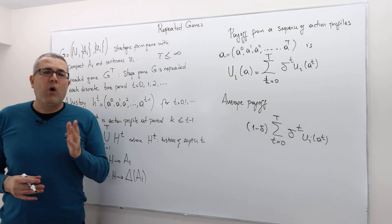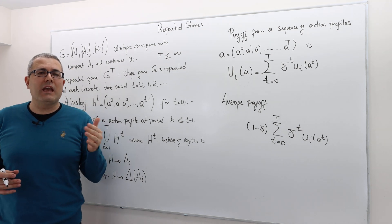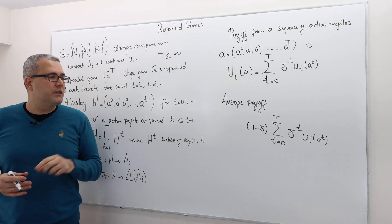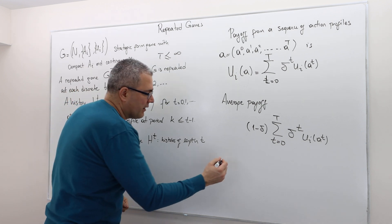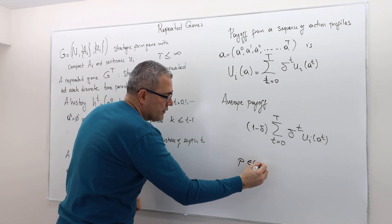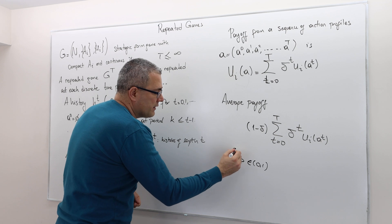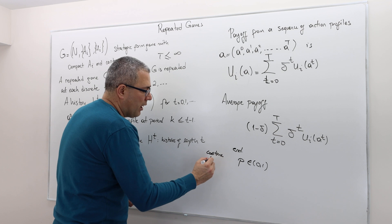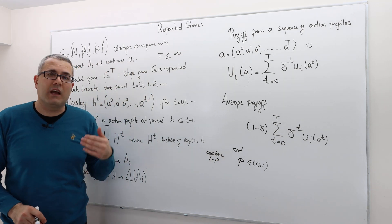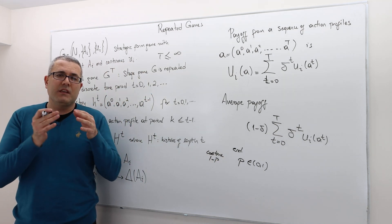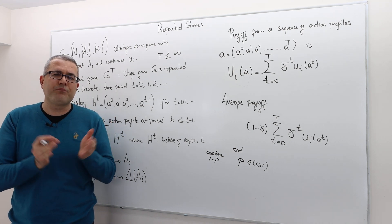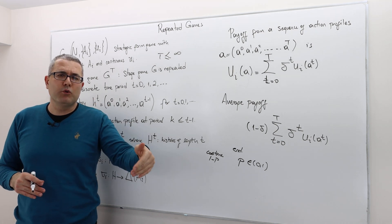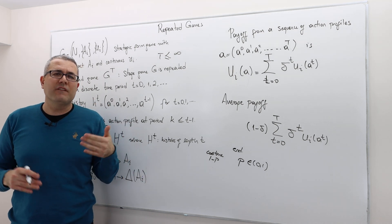One interpretation of a game not ending at all: you can say the game is going to end with some probability P, which is a number between zero and one — this is the ending probability — and will continue with probability one minus P. So at T equals zero, they play the game, and then randomly somebody determines whether the game will move to the next period or not, and players observe the outcome.